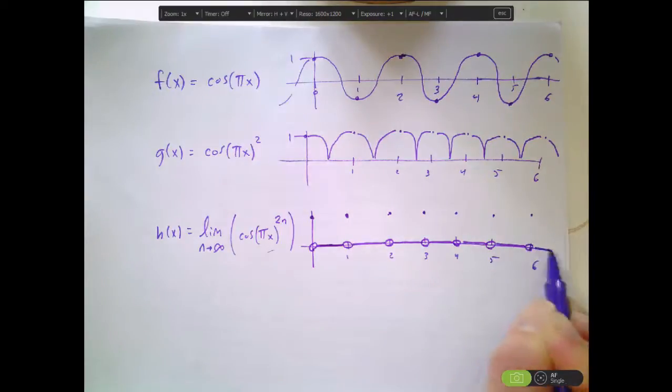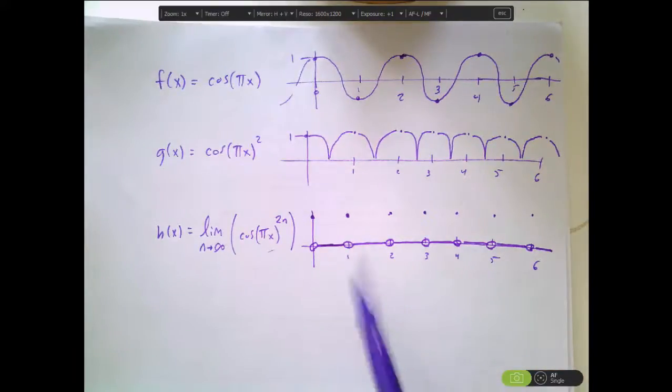So already, this is kind of a strange and interesting function. We've got a function that takes on a 0 value everywhere except at integer values where it takes on the value 1. So we've just got all these little isolated points here.